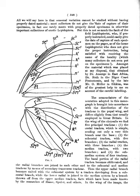Cuneus: equals wedge; particularly in mirid bugs, a wedge-shaped section of the hemelytra (fore wings), located at the apex of the thick, leathery part of the wings.